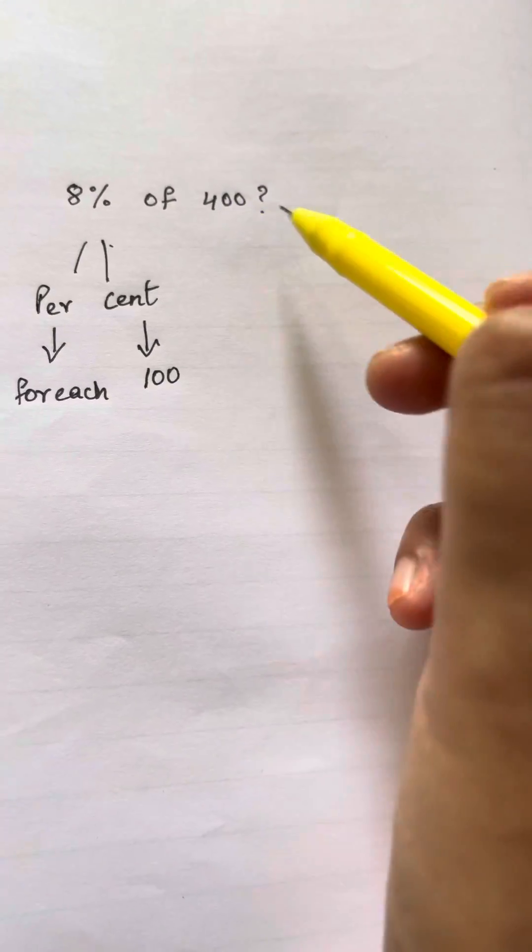Now, I'm going to check how many hundreds I have. So, I have one, two, three, and four. I have four hundreds, right?